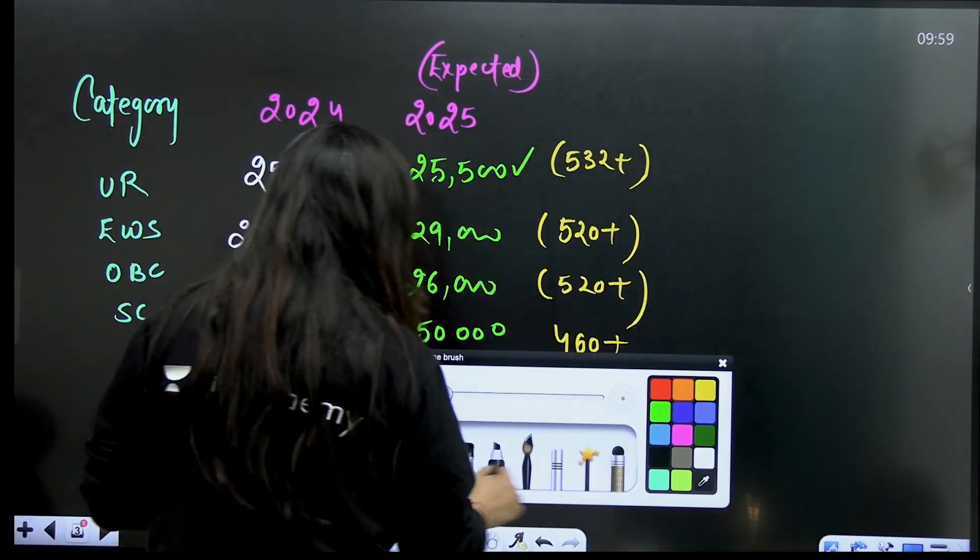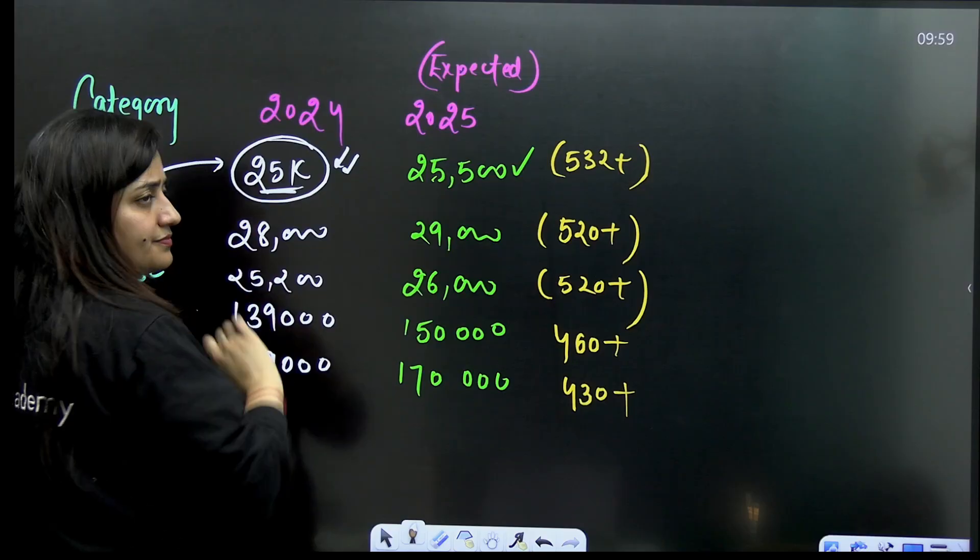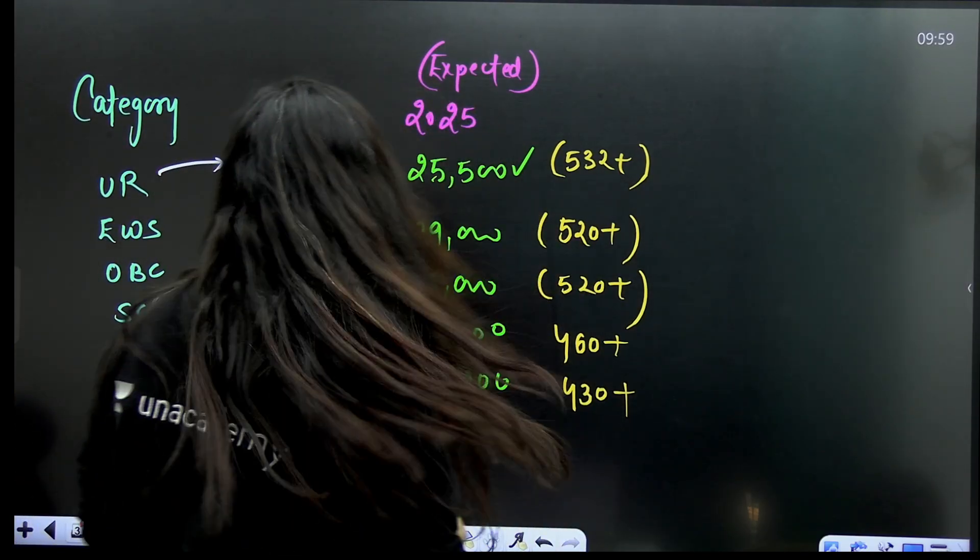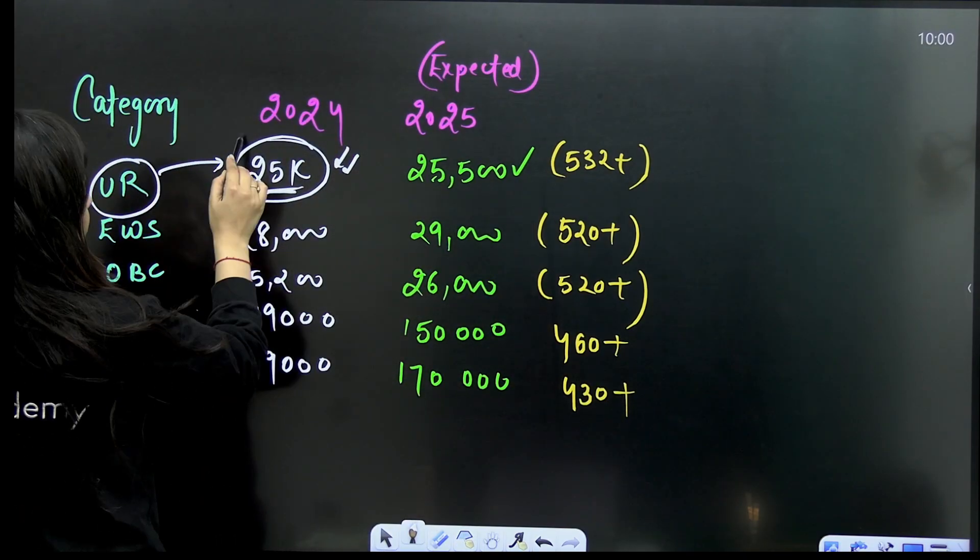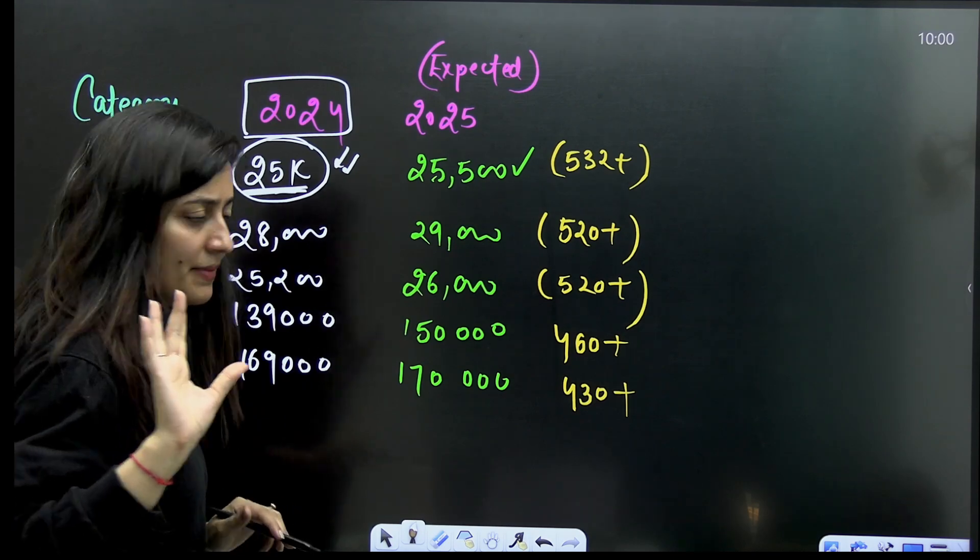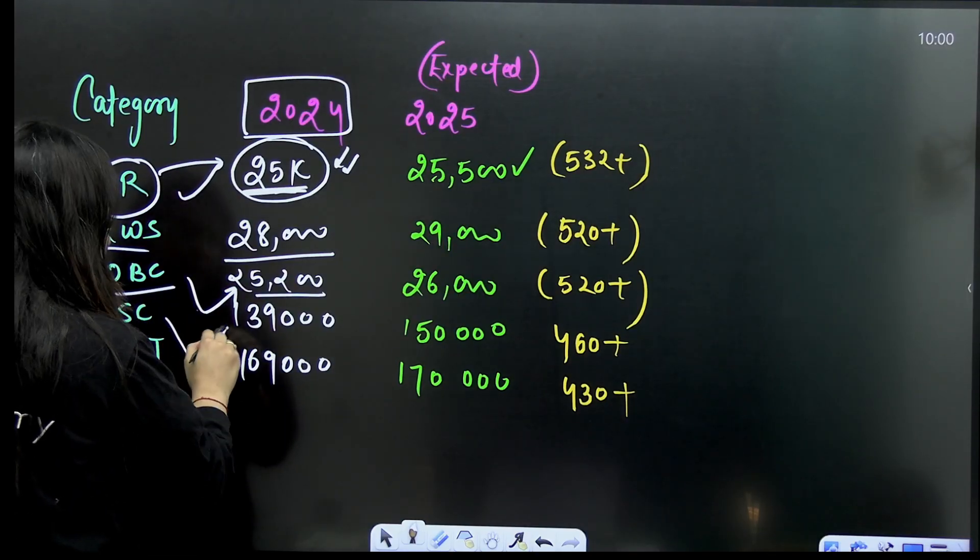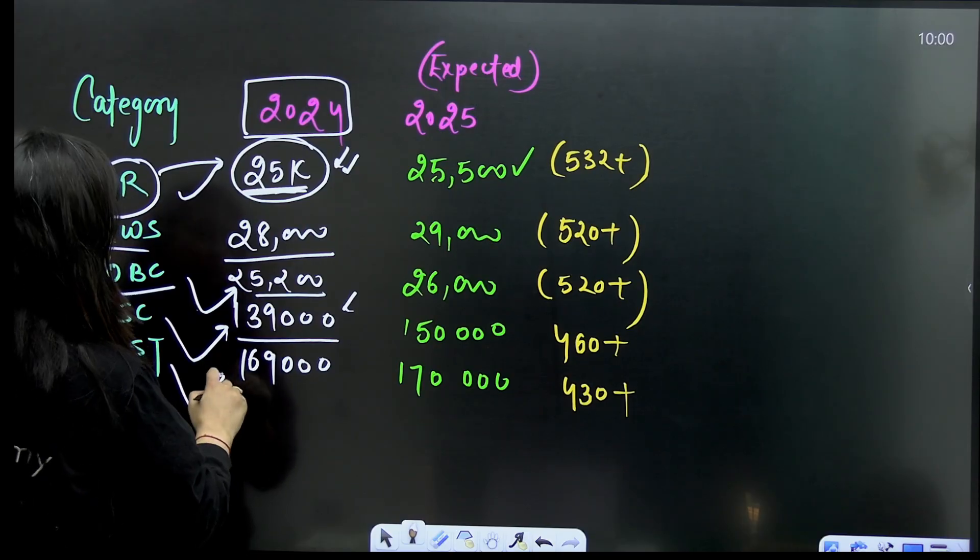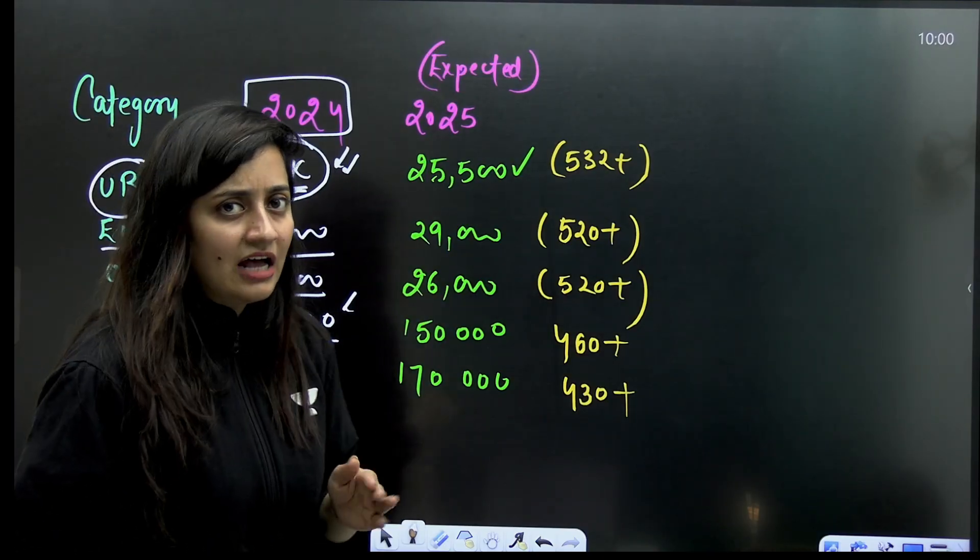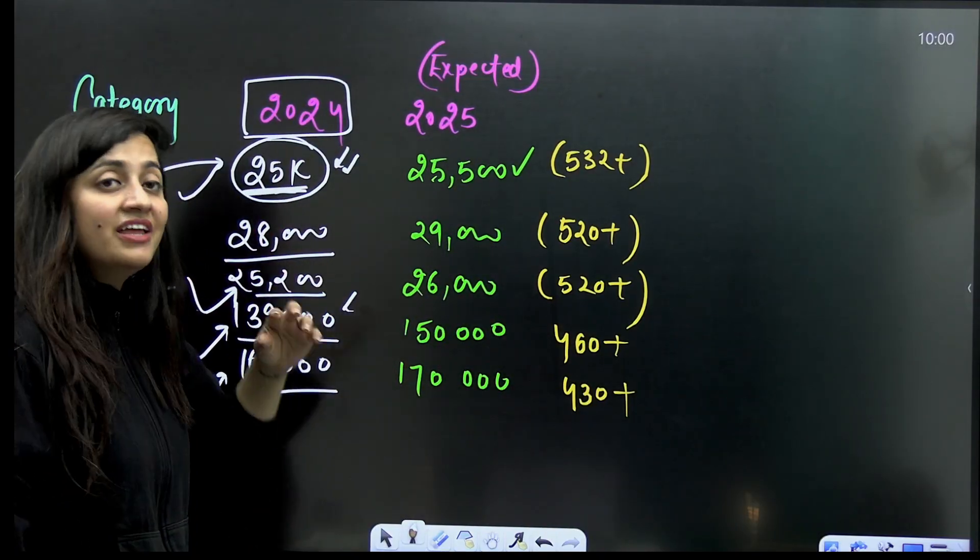Now if I talk about the expected rank and expected marks. In 2024, I'm taking round digits here. For unreserved category, the student having rank around 25,000 got government medical college. For EWS 28,000, for OBC 25,200, for SC 139,000. If you belong to SC or ST category and have the rank around one thousand or five thousand, definitely you will get a very good medical college.